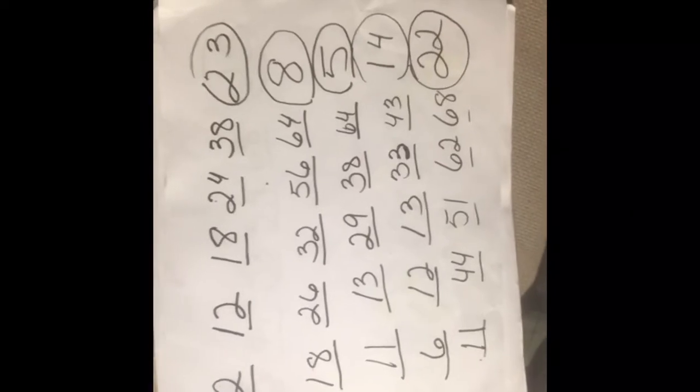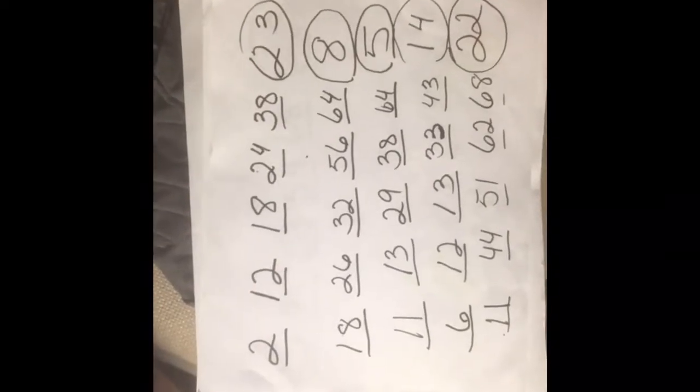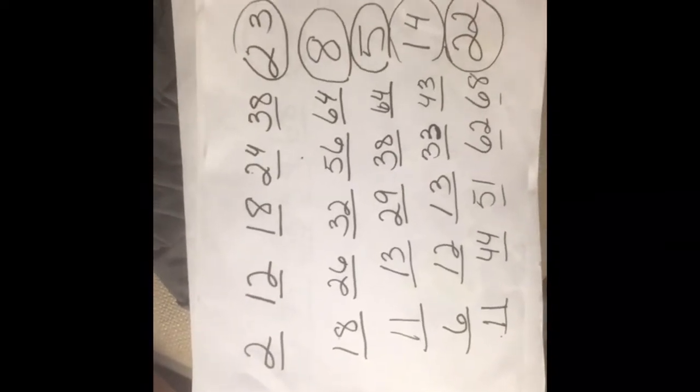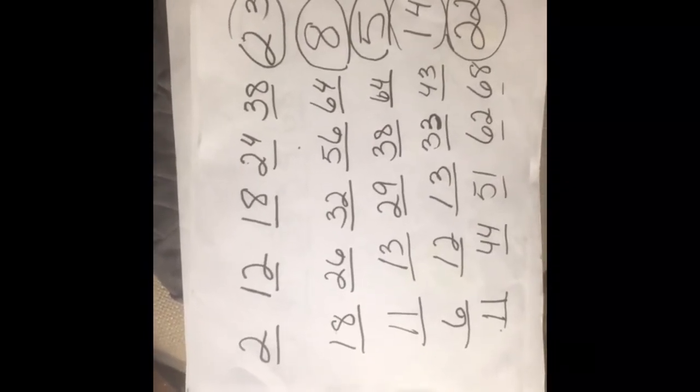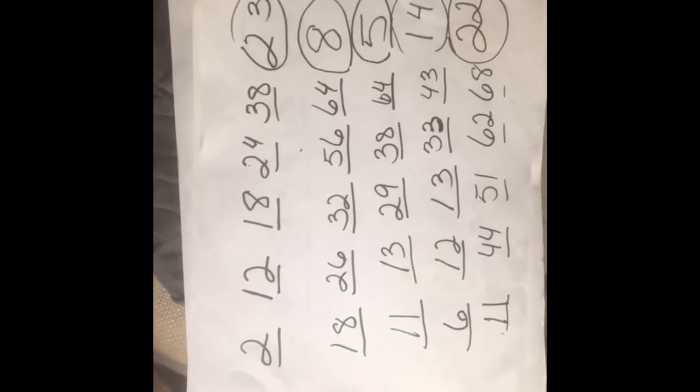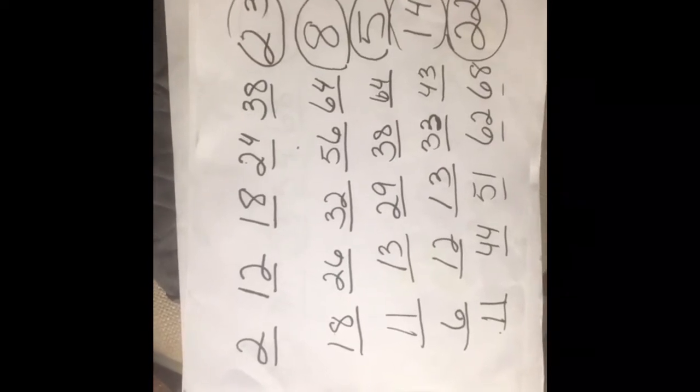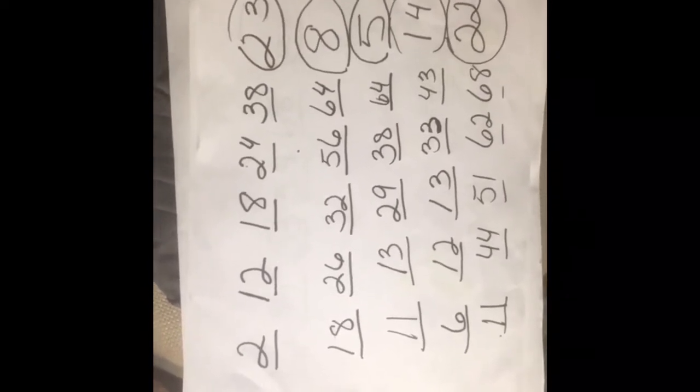Because I'm gonna do one for $25: 2, 12, 18, 24, 38, and the Mega Ball 23. 18, 26, 32, 56, 64, and the Mega Ball 8.